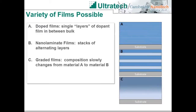Even beyond the number of different materials available, ALD film variety can be taken a step further by mixing and matching materials in different ways. Film doping can be accomplished by periodically substituting a cycle of a doping material into the bulk film. Laminate films can be accomplished by periodically switching chemistries between two different materials. And graded films can be accomplished through a controlled transition between the deposition of one bulk material to another.